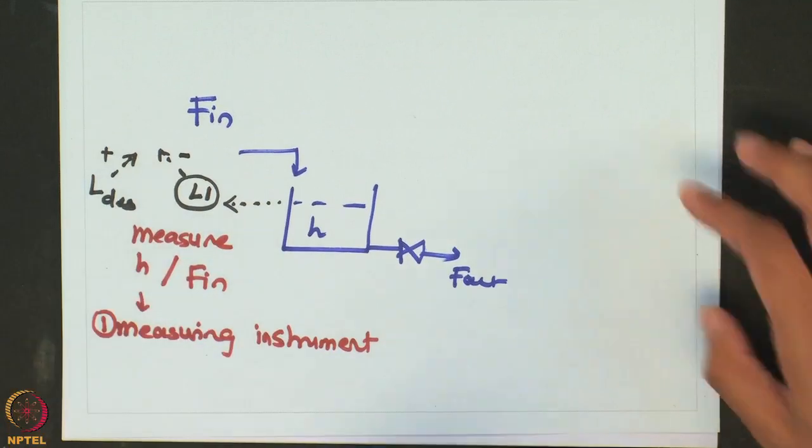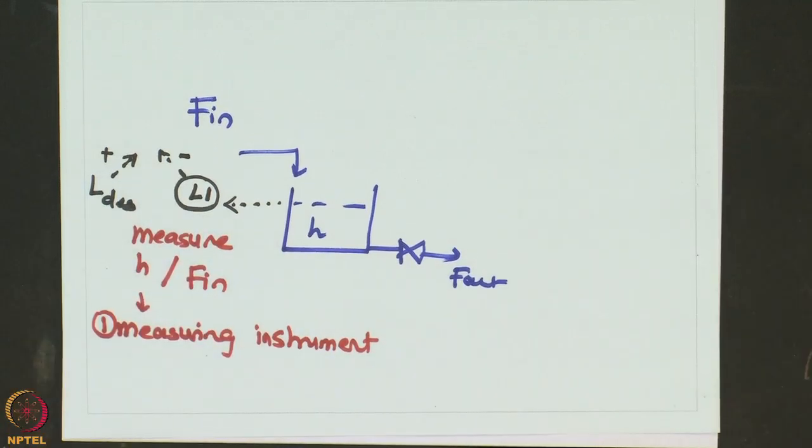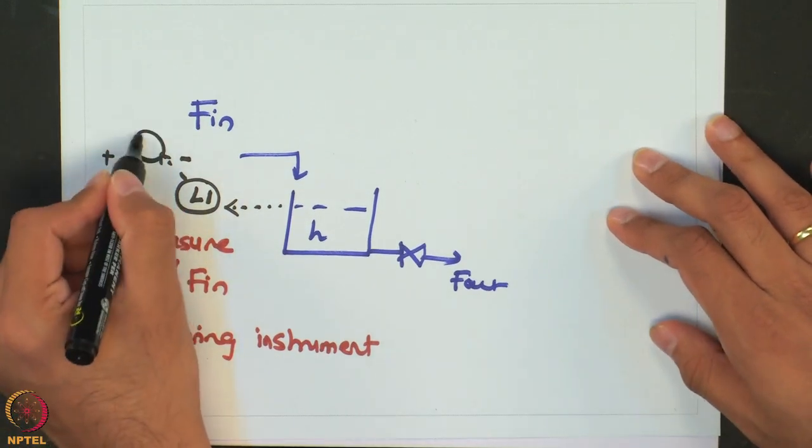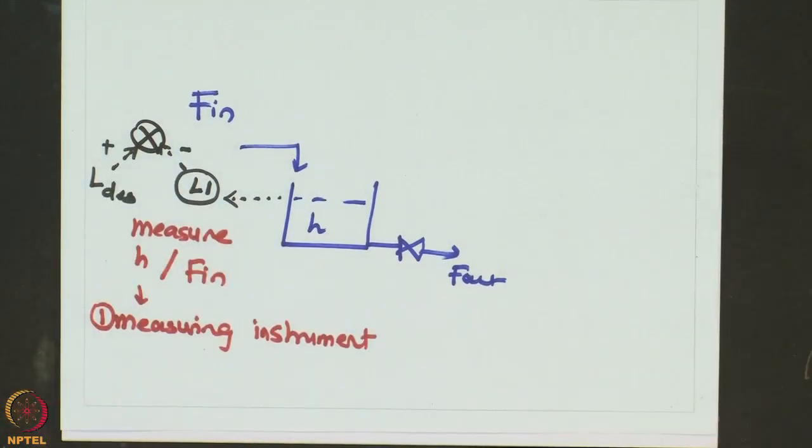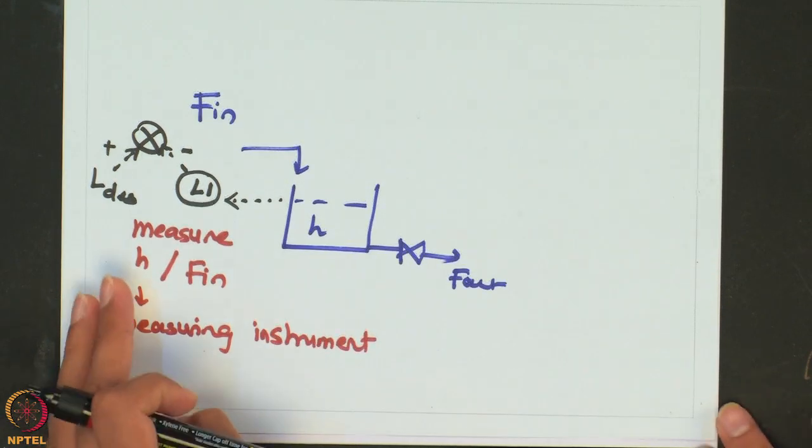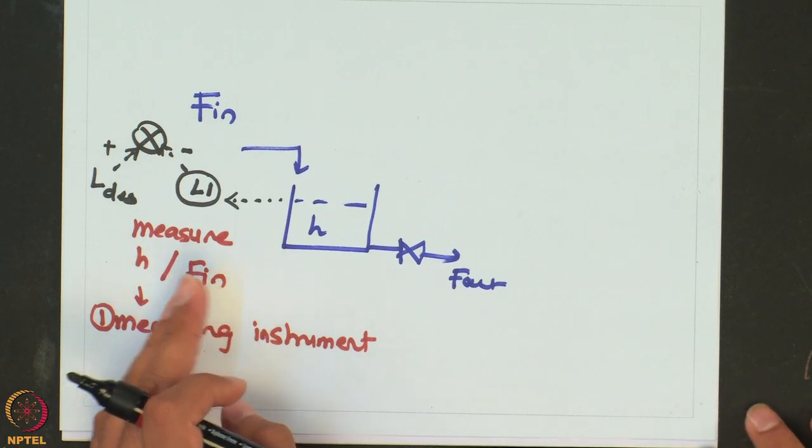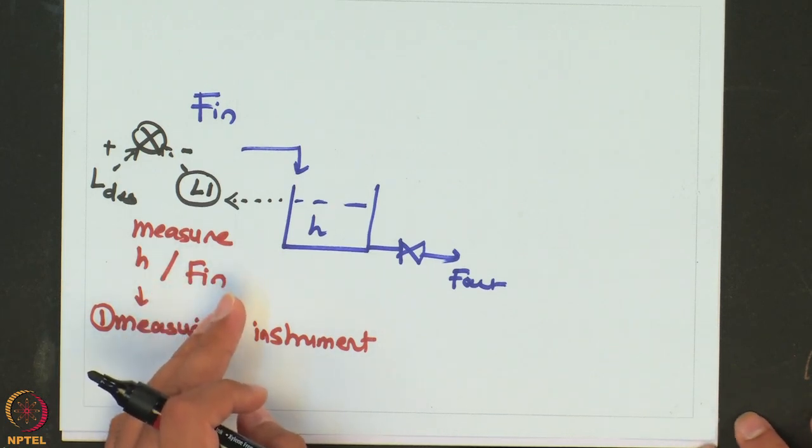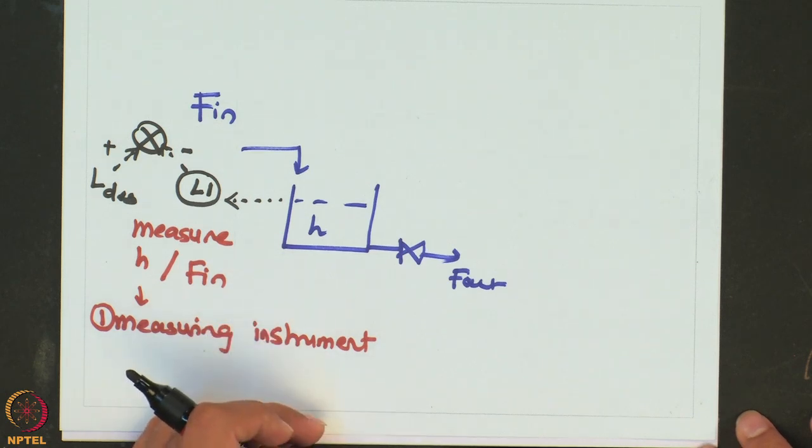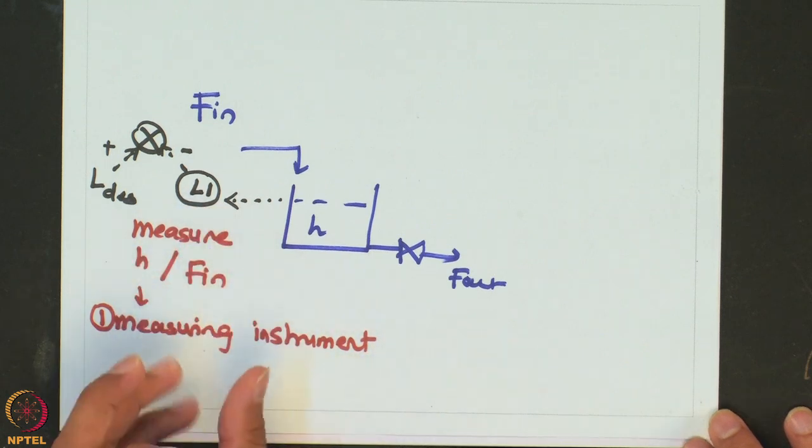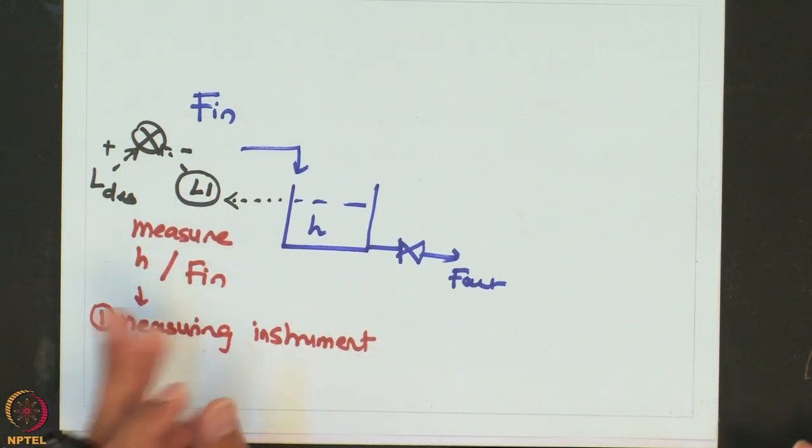You generally find out an error between the desired value and the current value and based on the value of this difference, if the difference is zero, no action has to be taken. If the desired minus the current value is positive then you would reduce the outlet flow rate so that the level will keep on increasing and the error will go on reducing, or if the other way round then it is vice versa.